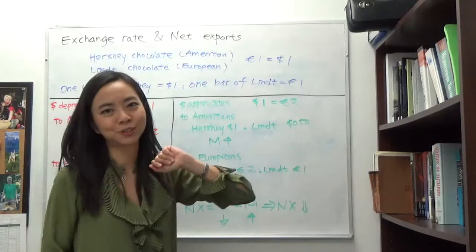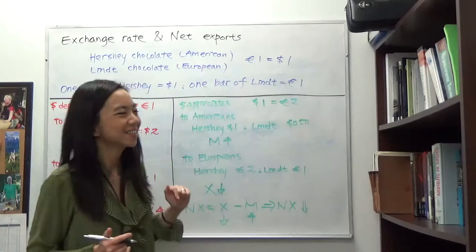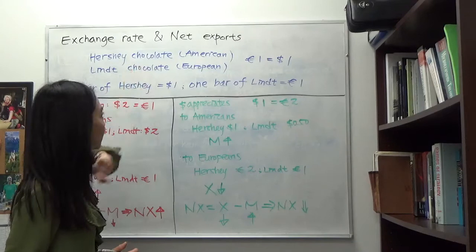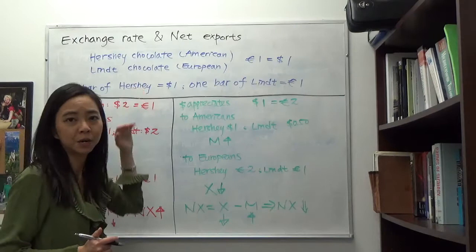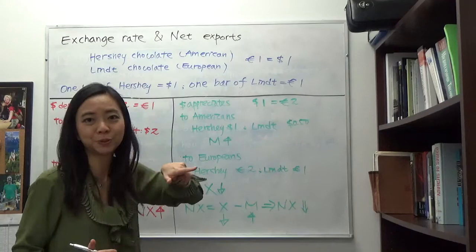To begin with, we're going to assume there's a very simple chocolate bar. A Hershey chocolate bar costs one dollar, and a Lindt chocolate bar costs one euro. The exchange rate is such that one euro is equivalent to one dollar. Therefore, Hershey chocolate costs Americans one dollar, and the same Hershey chocolate costs Europeans one euro.